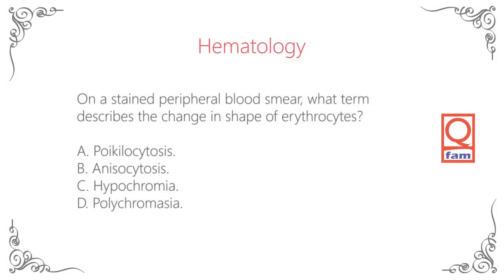On a stained peripheral blood smear, what term describes the change in shape of erythrocytes? A. Poikilocytosis. B. Anisocytosis. C. Hypochromia. D. Polychromasia. The answer is A — Poikilocytosis.